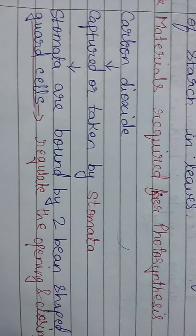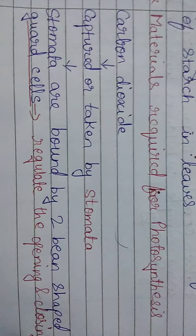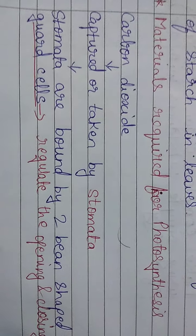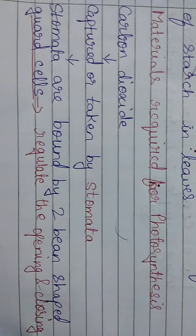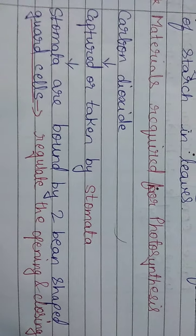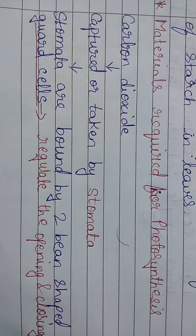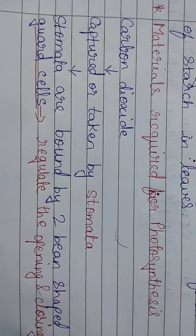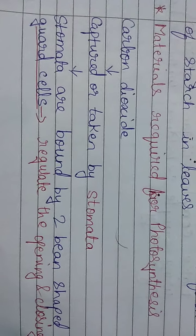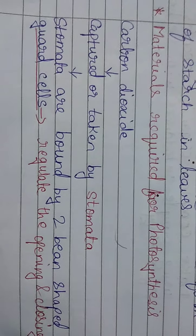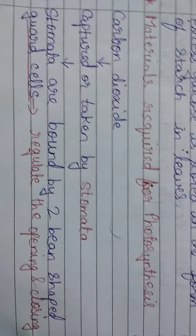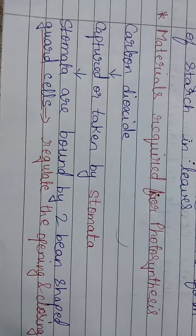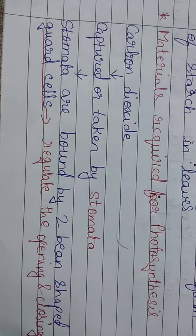Now cover both the plants with a bell jar, as shown in the figure. When we cover both plants with the bell jar, the carbon dioxide present inside the bell jar will be absorbed by the potassium hydroxide — meaning one of the plants will not have carbon dioxide. Place these bell jars in sunlight and let them stay there for a few hours.